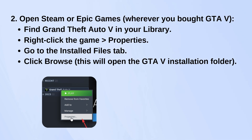From there, look for a tab called Installed Files or something similar, and click the Browse button. That'll open the folder where GTA is installed.